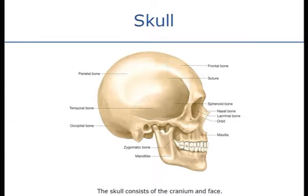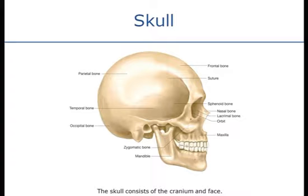They form an inflexible box that does not give, and it has one natural hole in the base of the skull — known as the foramen magnum, which is Latin for 'big hole' — and that's where the spinal cord comes up and becomes the brain stem.